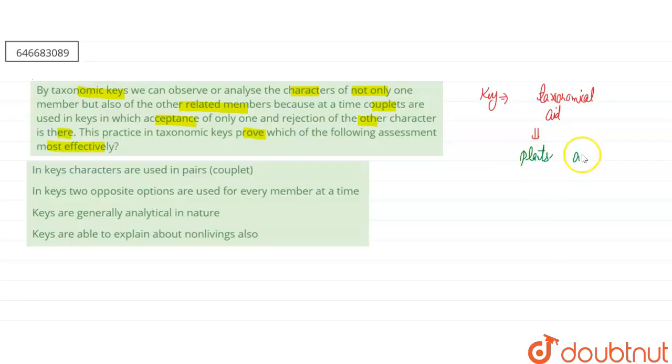This is most commonly used for plants as well as animals. So if you're talking about our first option, that is: in keys characters are used in pairs or couplets. This is our correct one.